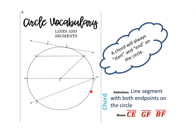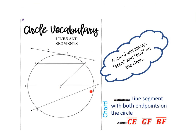The next word is chord. A chord is a line segment that starts and ends on the circle. So CE is an example of a chord because it starts and ends on the circle. GF is another example of a chord, and BF is another example of a chord because it starts and ends on the circle. The one I'm going to highlight is CE — CE is a chord.